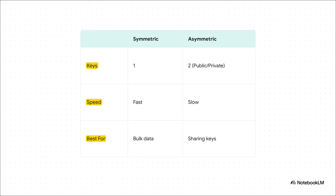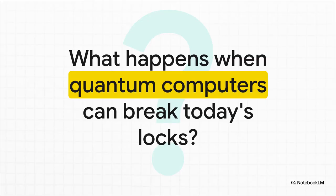Let's do a final showdown to lock it all in. Symmetric: one key, super fast, and the champ for bulk data. Asymmetric: two keys, a bit slower, but absolutely perfect for sharing keys securely. And the most important part? The modern internet gets the best of both by using them together. Today's encryption standards like AES and RSA are incredibly strong against the computers we have now — they're like a modern bank vault. But the next frontier is already on the horizon: what happens when a totally new type of computer, a quantum computer, comes along with enough power to potentially shatter the math behind these locks? That is the next great challenge in the amazing world of cryptography.